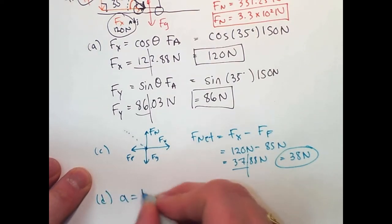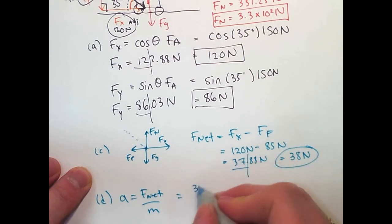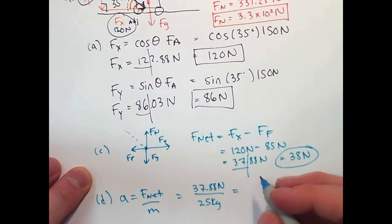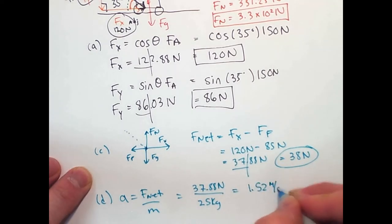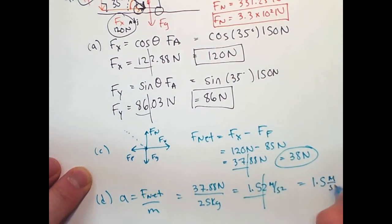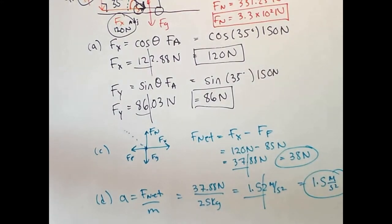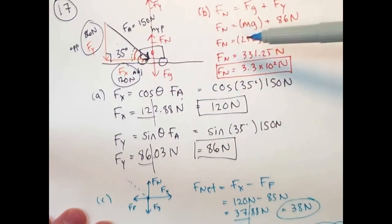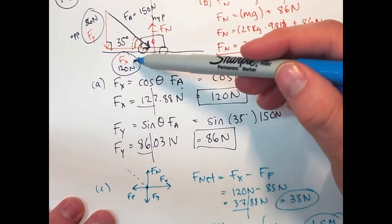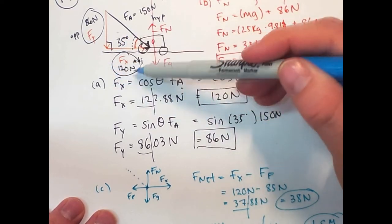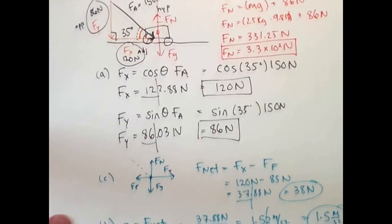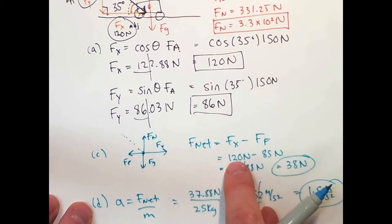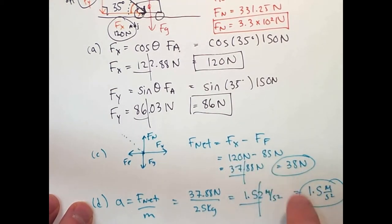The last part is acceleration. Acceleration equals net force over mass — 37.88 newtons divided by 25 kilograms equals 1.52 meters per second squared to significant digits. And that is number 17. Remember: if you have a force applied at an angle, resolve it to its components. The horizontal component is what actually moves it, and that ties into the net force to find acceleration.